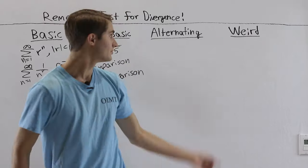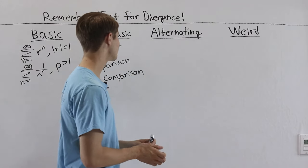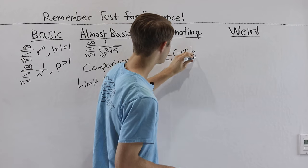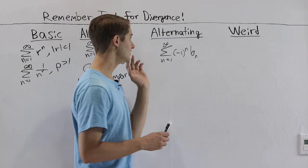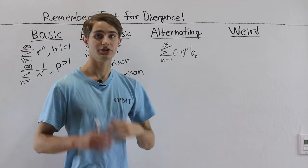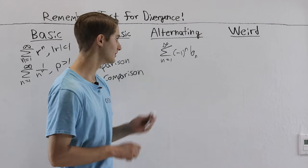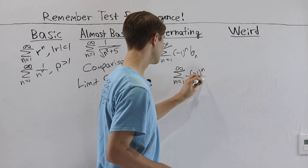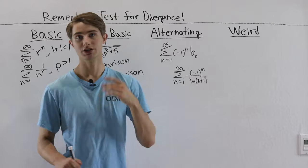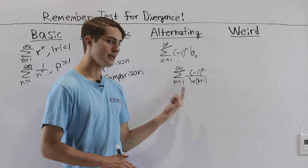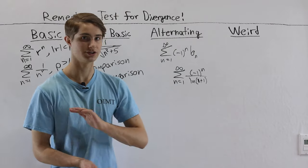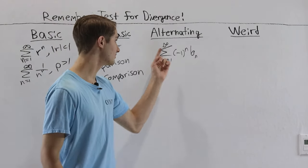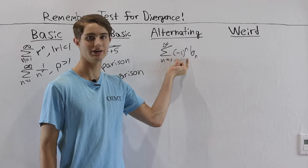The next category is alternating series, which is exactly what it sounds like. If we have the sum from n equals 1 to infinity of negative 1 to the n times b sub n, where b sub n is positive, this is an alternating series. Any time we have an alternating series, it's always a good idea to try the alternating series test. For example, the sum of negative 1 to the n over the natural log of n plus 1 — we can prove this converges by the alternating series test.